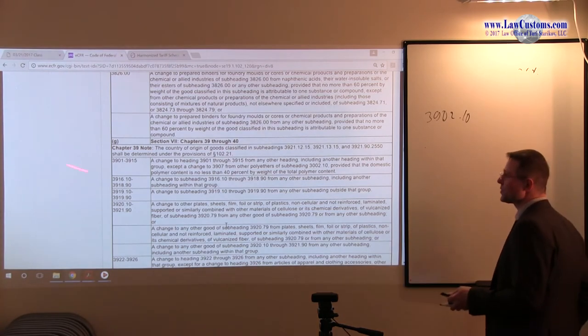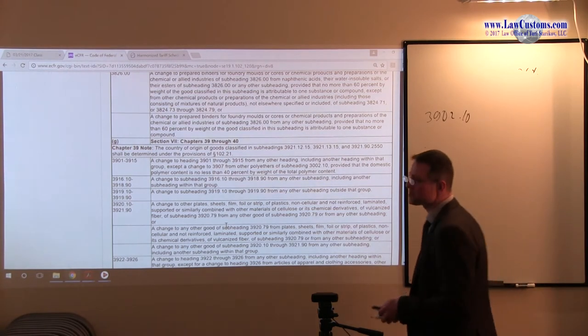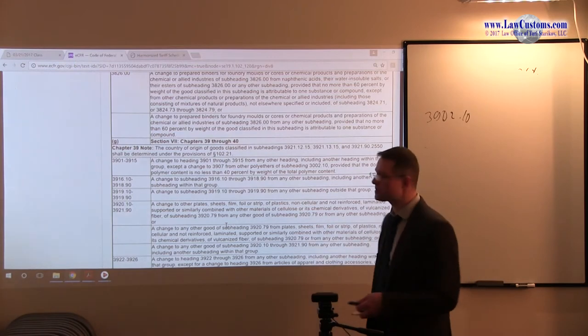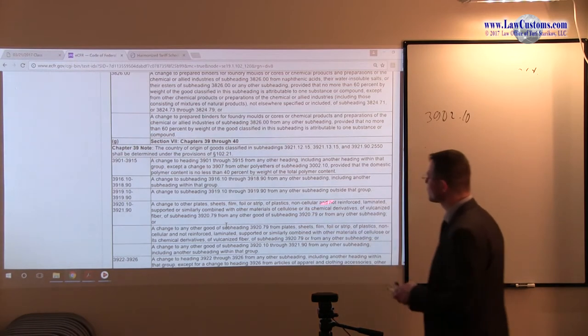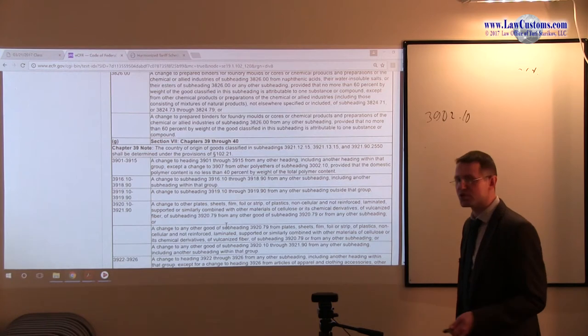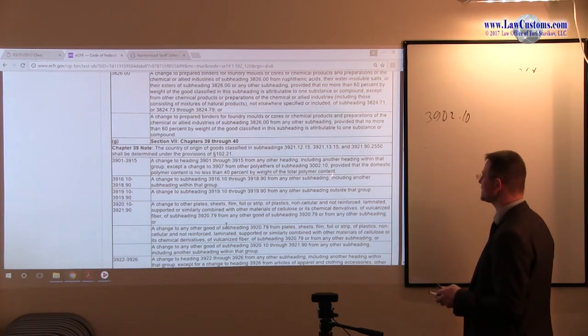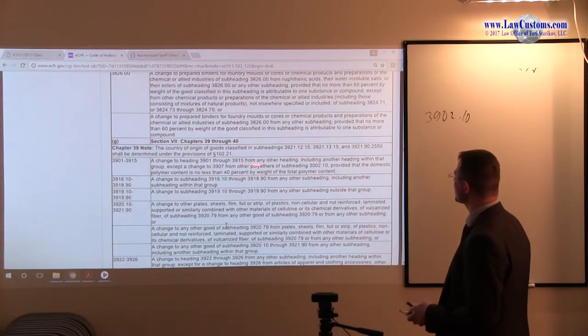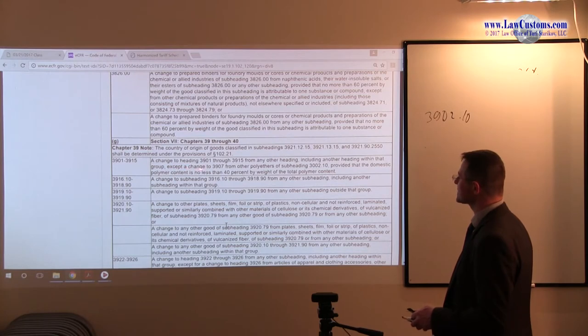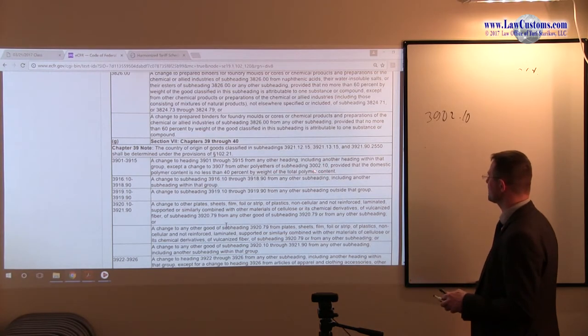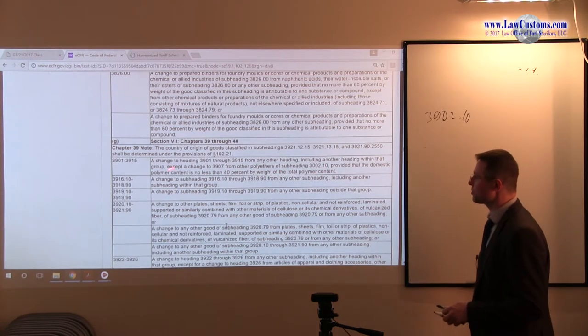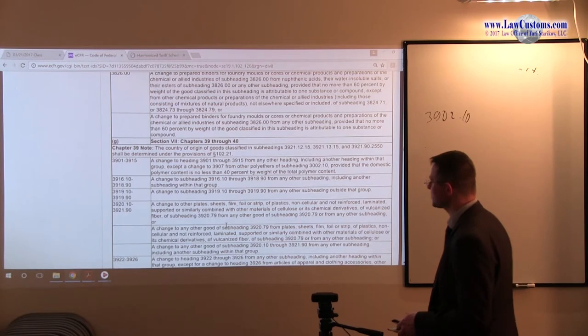Chapter 39, subheading 3902 falls somewhere in between these particular headings. The rule is applicable to the question at issue: a change to heading 3901 through 39.15 from any other heading, including another heading within that group, except a change to 3907 from polyether of this subheading, provided the domestic polymer content is not less than 40% by weight.